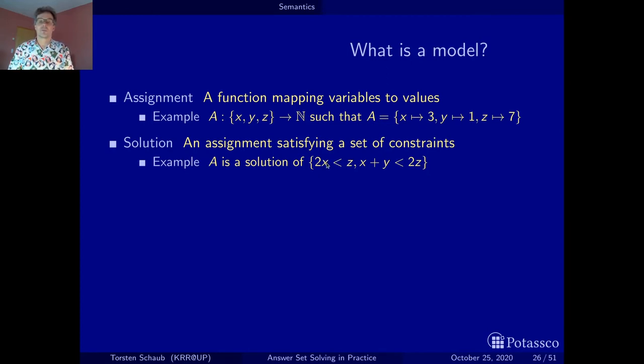In our case, this is the case. So 2 times the value of x is 2 times 3 is 6, smaller than the value of z, 7. And the value of x plus the value of y is 4. This is smaller than 2 times the value of 7, which is 14. So this particular assignment satisfies both constraints, and you can imagine that there are many other assignments over the integers that satisfy this toy problem.